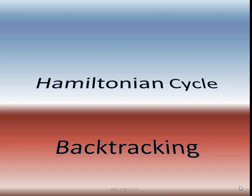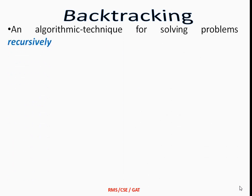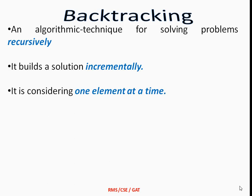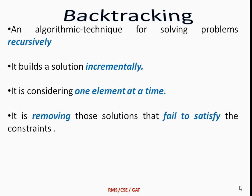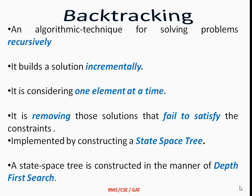Before continuing with Hamiltonian cycle, let me recall the backtracking technique which we have already discussed in previous videos. Backtracking is an algorithmic technique used for solving problems recursively by building the solution incrementally, considering one element at a time. While constructing the solution, if we find any solutions which are not satisfying the conditions, we need to remove those solutions. This can be implemented by constructing a state space tree using DFS — depth first search.